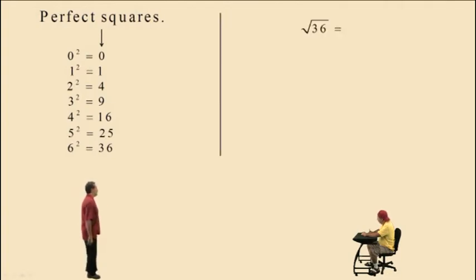Now let's find the square root of 36. What positive number do you square to get 36? It's 6. Square root of 49 is positive 7 because 7 squared is 49. Square root of 144 is 12 because 12 squared is 144.